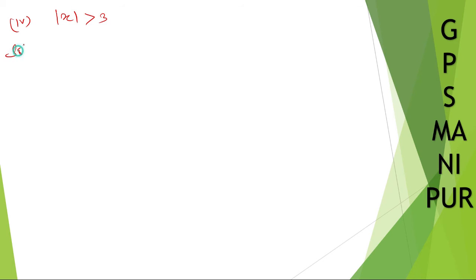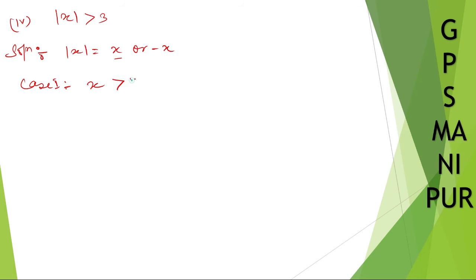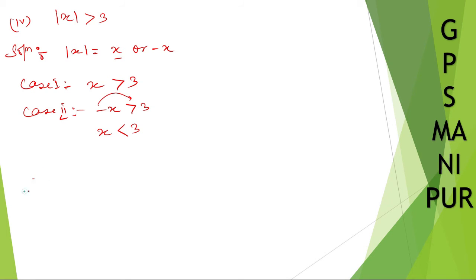Roman number 4: mod of x is greater than 3. The solution: mod of x can be written as x or minus x. Case 1 will be x is greater than 3. Case 2 will be minus x is greater than 3, and if you change the sign the direction also changes, so it becomes x is less than minus 3.